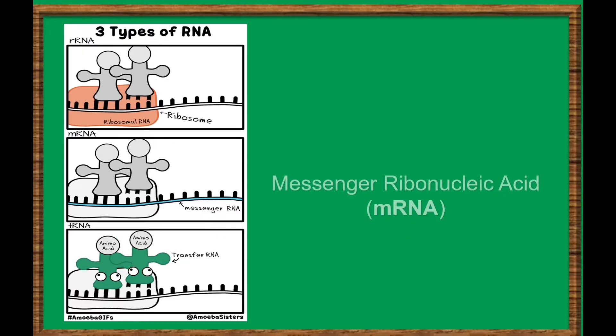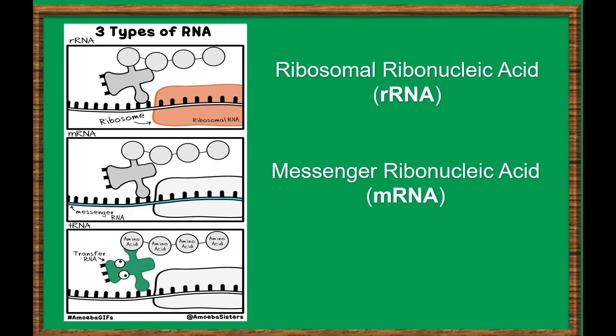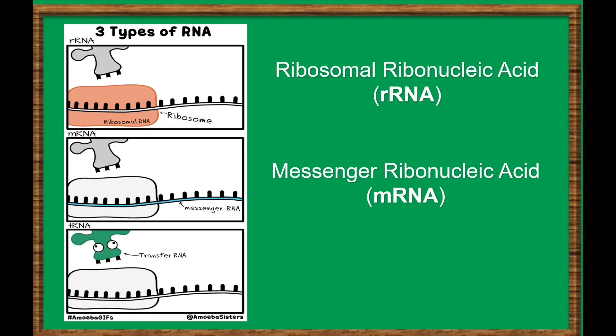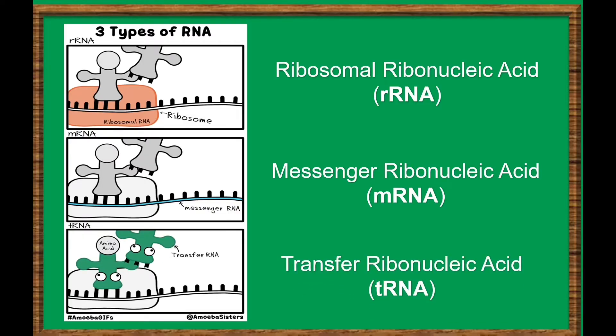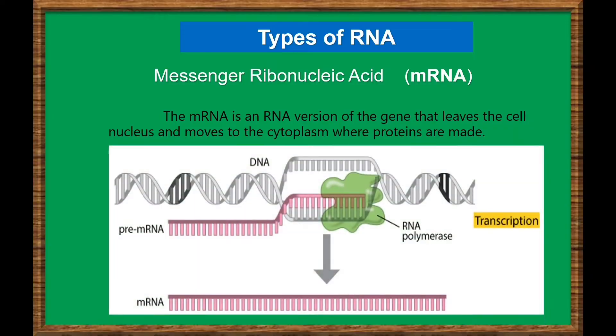The type of RNA dictates the function the molecule will have within the cell. Of the many types of RNA, the three most well-known and most commonly studied are Messenger Ribonucleic Acid, or mRNA; Ribosomal Ribonucleic Acid, or rRNA, which are present in all organisms; and Transfer Ribonucleic Acid, or tRNA. Let's start with the first type: Messenger Ribonucleic Acid, or mRNA. mRNA is a single-stranded RNA molecule that is complementary to one of the DNA strands of a gene. The mRNA is an RNA version of the gene that leaves the cell nucleus and moves to the cytoplasm where proteins are made.